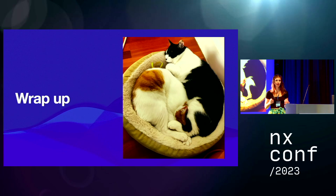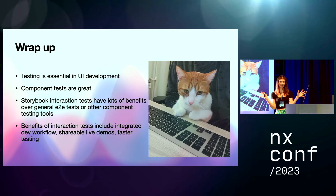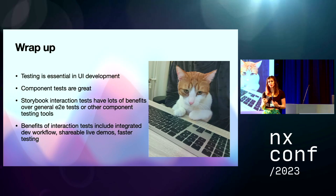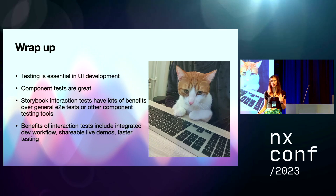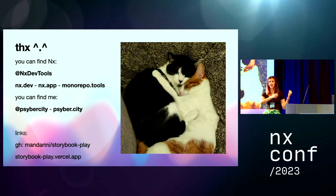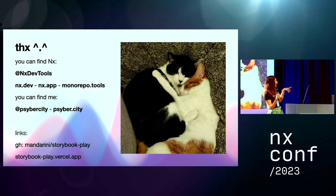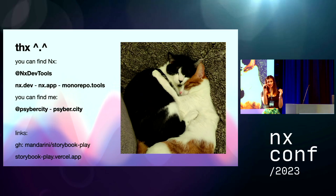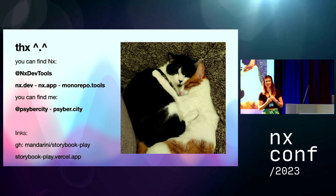Let's wrap up now. Testing is essential in your development. Component tests are great. Storybook interaction tests have lots of benefits over general E2E tests or other component testing tools because, if you're already using Storybook, they remove the need to maintain extra code and extra tools. The benefits of interaction tests include integrated dev workflow, shareable live demos, and faster testing. You can find the code for what I showed at my GitHub — mandarinis.storybookplay — and there's a live example at storybook-play.vercel.app. You can follow me and follow NX. That's it!